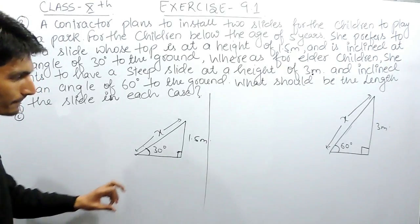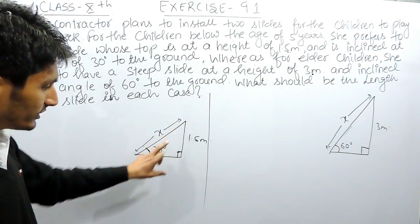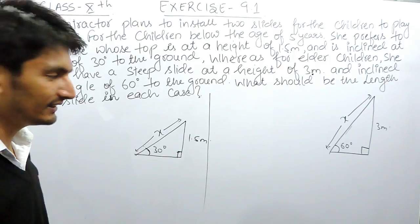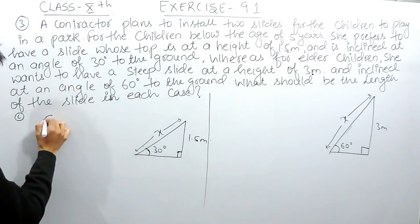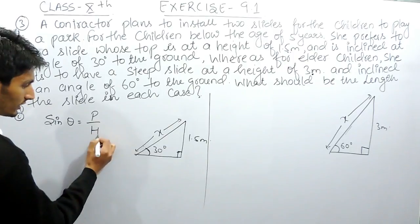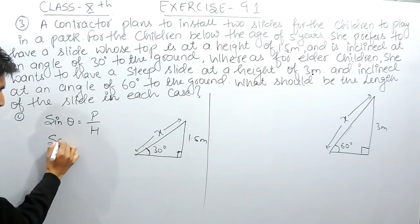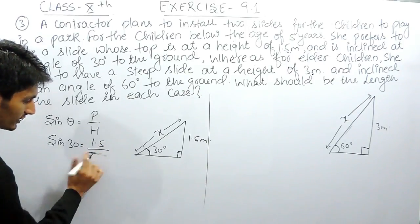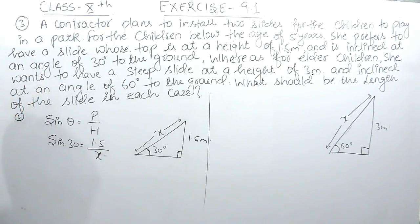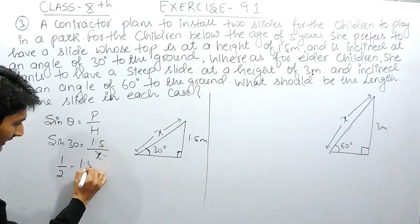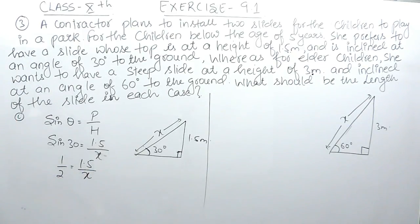In the first case, the perpendicular is given — it is the side opposite to theta — and we need to find the hypotenuse, which is opposite the 90-degree angle. We use the sine ratio: sine theta equals perpendicular upon hypotenuse. Here theta is 30 degrees, perpendicular is 1.5 meters, and hypotenuse is x. The value of sine 30 is 1/2, which we already know from trigonometry.